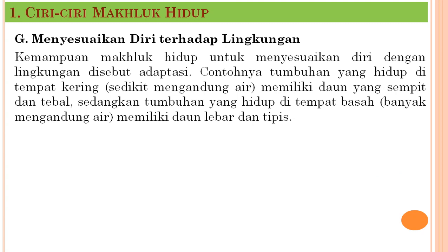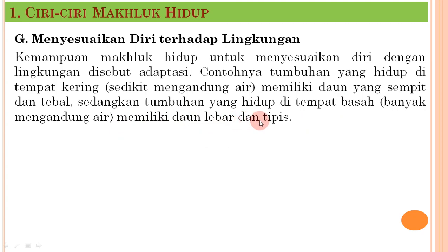Ciri selanjutnya adalah menyesuaikan diri terhadap lingkungan. Kemampuan makhluk hidup untuk menyesuaikan diri dengan lingkungan disebut adaptasi. Contohnya, tumbuhan yang hidup di tempat kering memiliki daun yang sempit dan tebal, sebaliknya tumbuhan yang hidup di tempat basah memiliki daun lebar dan tipis.